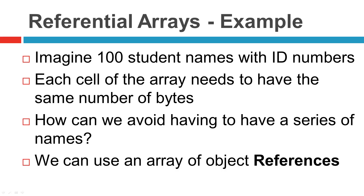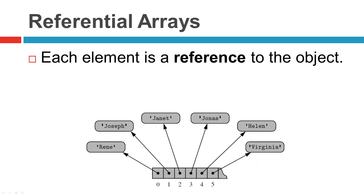Looking at the diagram, each element is a reference to the object — index 0 references the string 'Rene', and so on. Although the relative size of the individual elements may vary, the number of bits used to store the memory address of each element is fixed. In this way, Python can support constant-time, O(1), access to a list or tuple element based on its index.